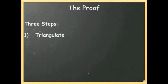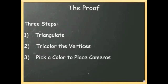First, we need to triangulate the floor plan. That simply means to divide the floor plan into triangles. We'll see how to do this in general in just a minute. Next, we need to tricolor the vertices. All this means is that we're going to color each of the vertices either red, yellow, or blue, so that each triangle has just one vertex of each color. Finally, we're going to pick one of the three colors to place our cameras at. So let's look at an example.